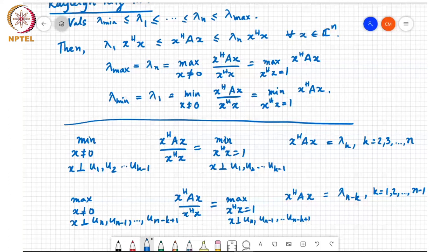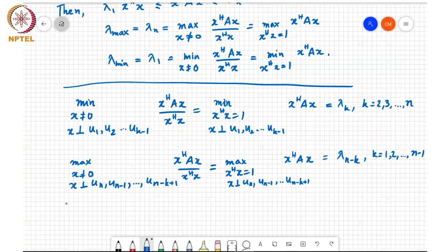So this is one kind of crucial result we saw. Another very crucial result, which we will actually use many times going forward, is the Courant-Fischer theorem.